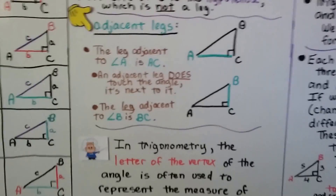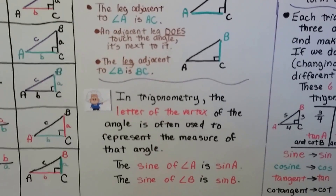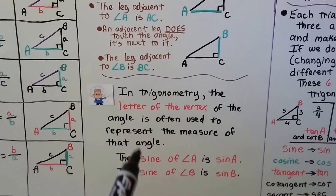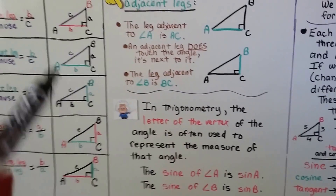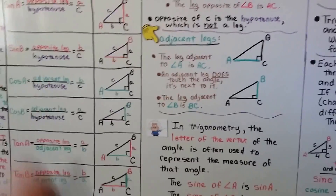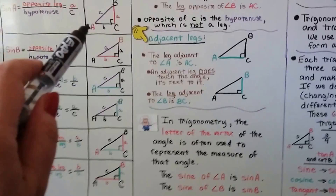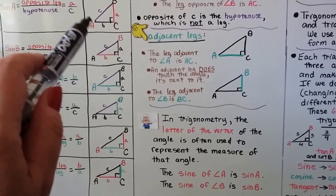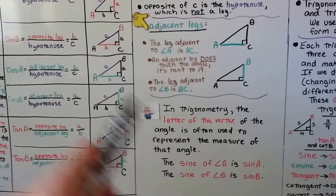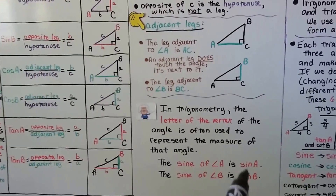In trigonometry, the letter of the vertex of the angle is often used to represent the measure of that angle. So the sine of angle A is written as sine A — right up here. The sine of angle B is written as sine B.